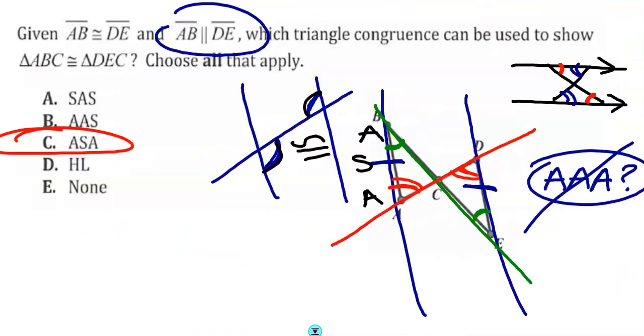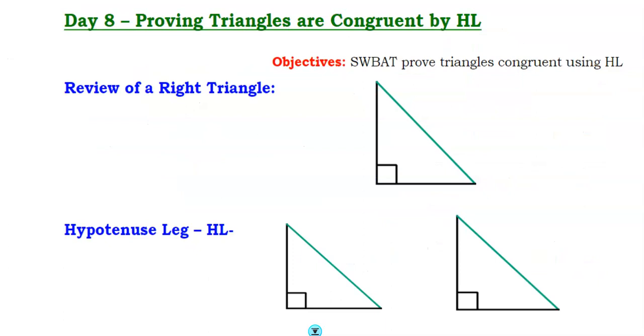The last one, close your eyes because I'm going crazy. The last one is called HL. That is known as hypotenuse leg.